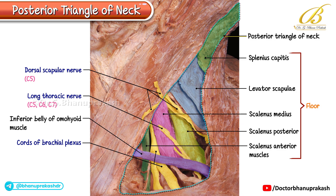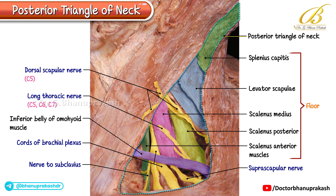The long thoracic nerve, C5, C6, C7, is also seen piercing the scalenus medius muscle. The nerve to subclavius runs beneath the inferior belly of the omohyoid, traversing across the scalenus anterior. The supraclavicular nerve is visible beneath the inferior belly of the omohyoid, lateral to the cervical part of the brachial plexus.